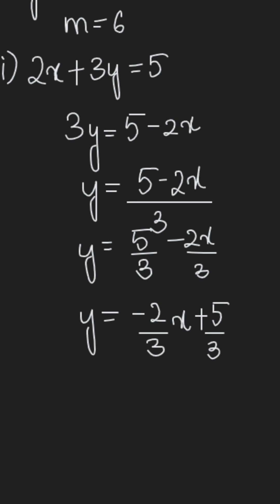Now this equation is clearly in the slope intercept form, or the gradient form, where m, which is the coefficient of x, is negative 2 by 3. Hence the slope of this equation is given as minus 2 by 3.